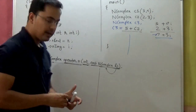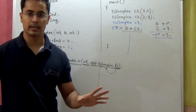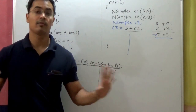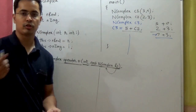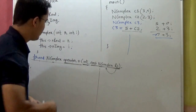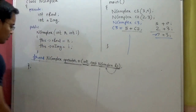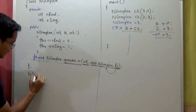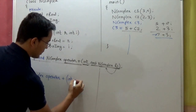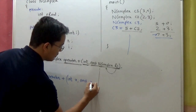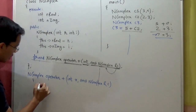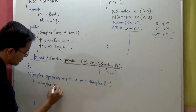Once declared, I define this function outside the class — it is a global function, accessible by anyone. You can declare the friend function in the public or private section; it doesn't matter, it is a global function. When defining it outside, you do not need to use the scope resolution operator, because this is not a normal member function. You directly write: n complex operator+(int x, const n complex& c).